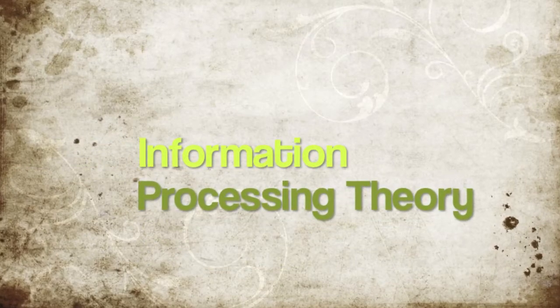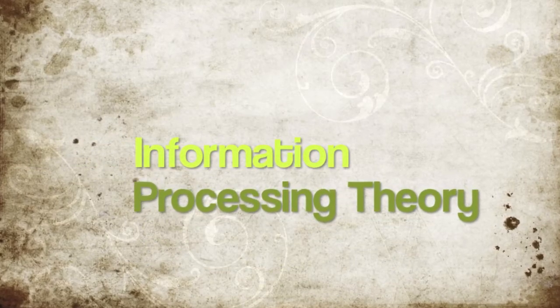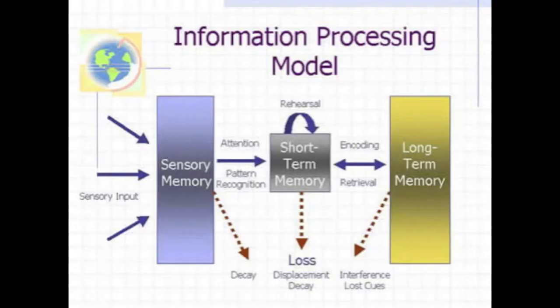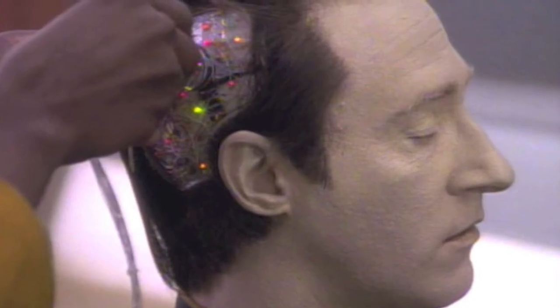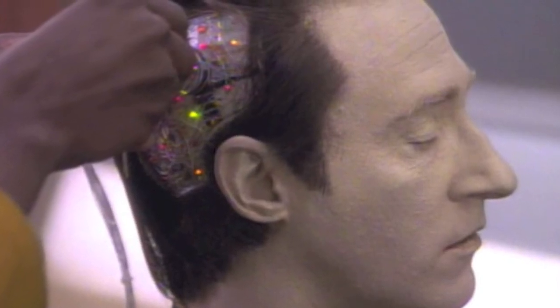We're going to take a quick look at information processing theory. It is based on the idea that humans process the information they receive rather than merely responding to stimuli. Within this model, humans are routinely compared to computers. This comparison is used as a means of better understanding the way information is processed and stored in the human mind.